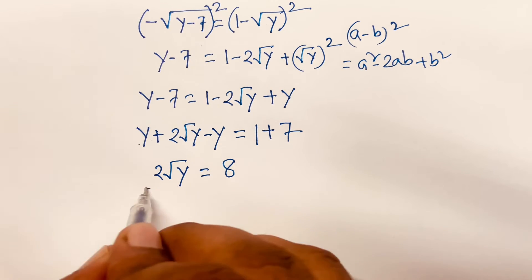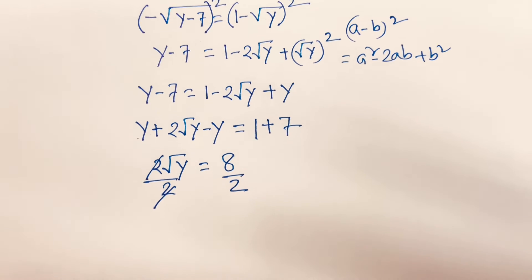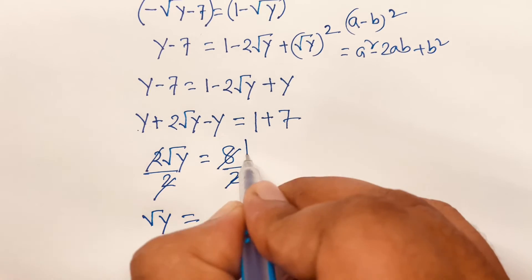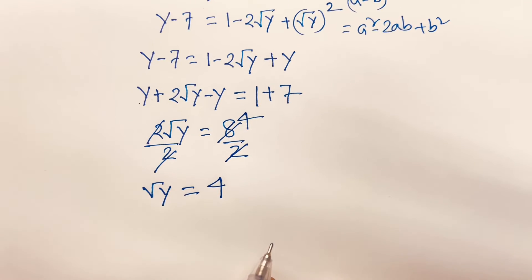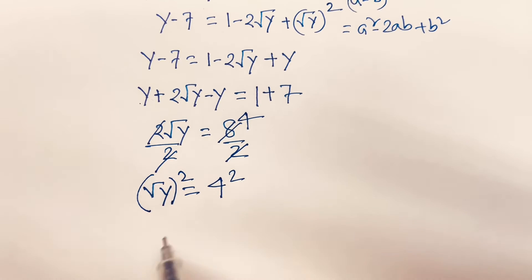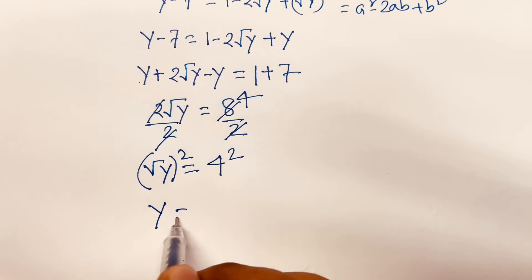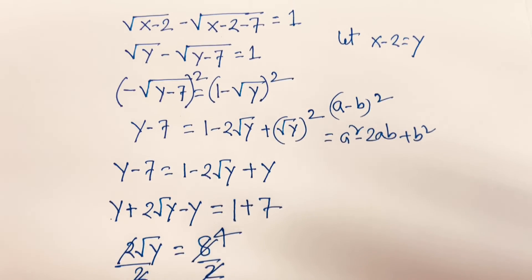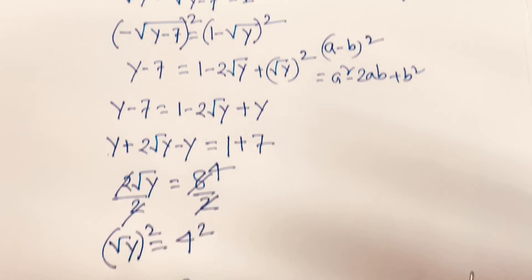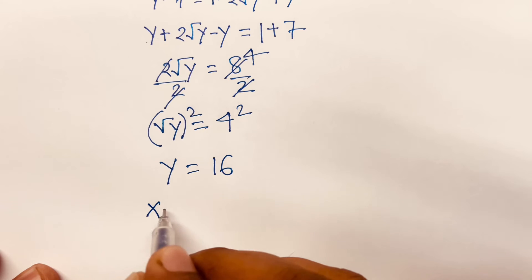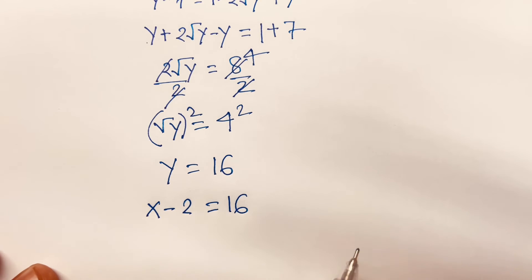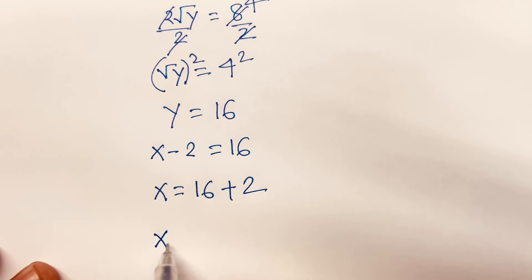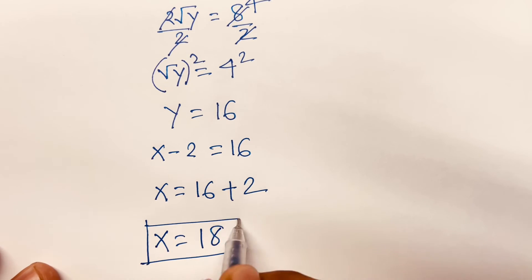I divide both sides by 2, the 2 cancels, so square root y equals 8 divided by 2 equals 4. Squaring both sides, the square root cancels and we find y equals 16. We know that y equals x minus 2, so x minus 2 equals 16, therefore x equals 16 plus 2, and x equals 18. This is our final answer.